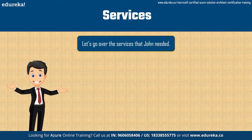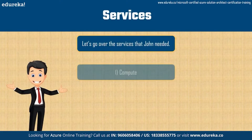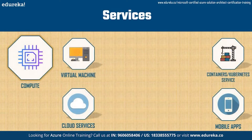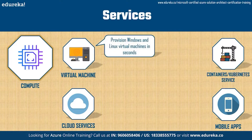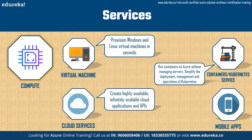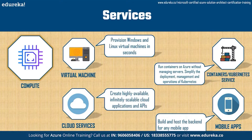Let's now go back to John. John needed three services: compute, networking, and storage. The first product he needs is compute. He can use this to deploy and manage virtual machines, containers, and batch jobs, as well as support remote application access.